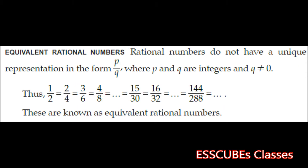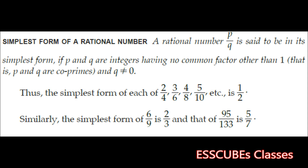Rational numbers do not have a unique representation in the form P by Q, where P and Q are integers and Q not equal to 0. Thus, 1 by 2, 2 by 4, 3 by 6, or even 144 by 288 are all equal — by cancelling them, we get the ratio 1 by 2. These are known as equivalent rational numbers. A rational number P by Q is said to be in its simplest form if P and Q are integers having no common factor other than 1 — that is, P and Q are co-primes — and Q not equal to 0.